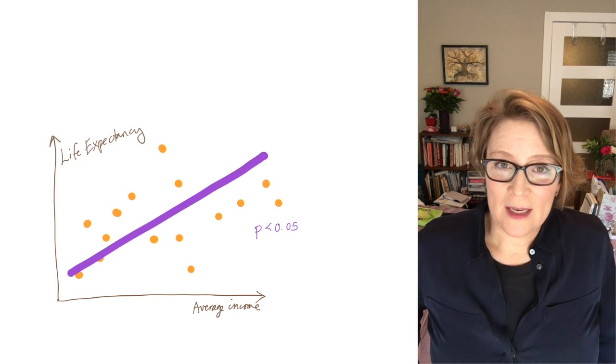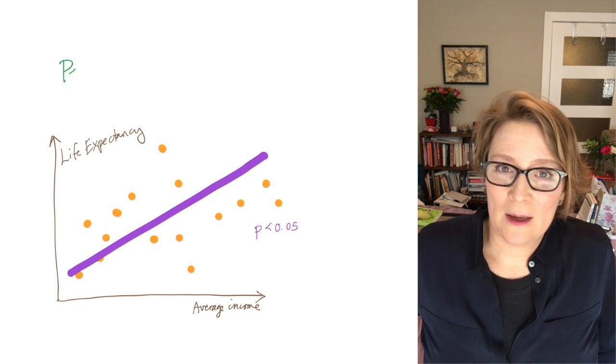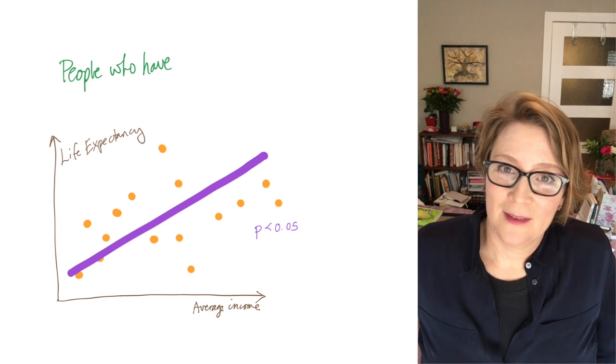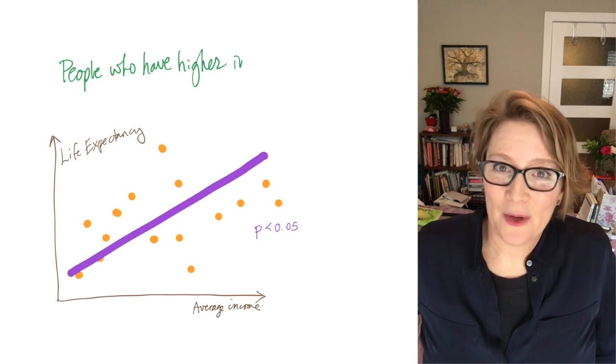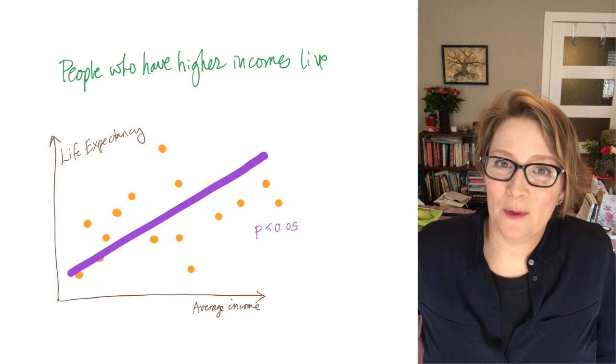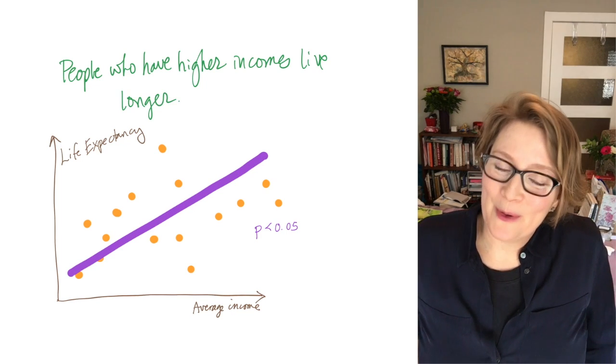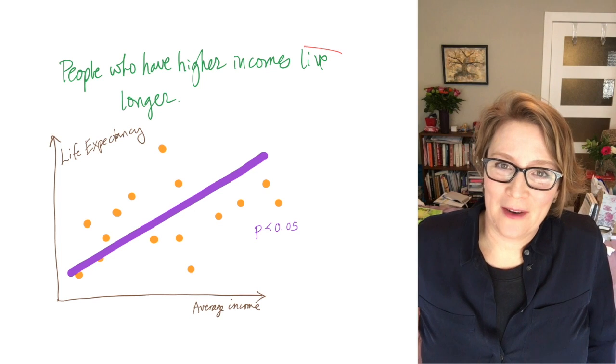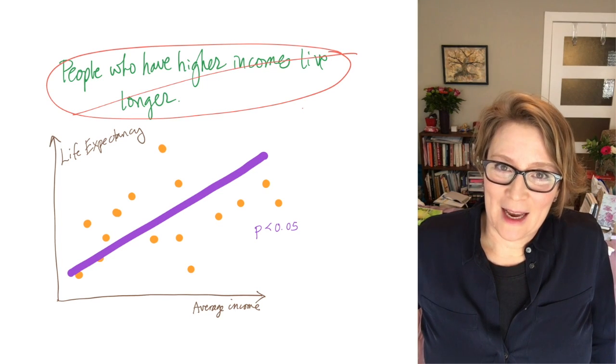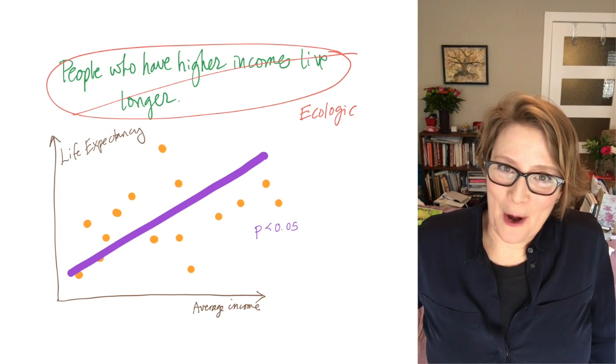So it's very easy then to think you can say people who earn more money live longer. But from this data, you cannot say that people who have more income live longer. That's the very same thing as saying people who smoke more cigarettes live longer.